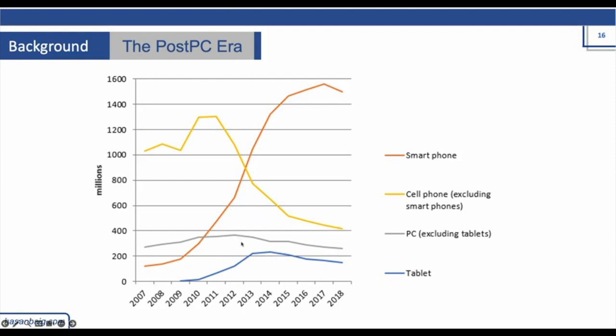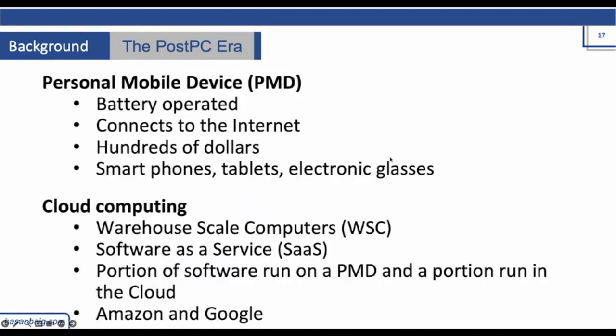For the PCs it's 2012. So you can see the number of smartphones manufactured nowadays is clearly increasing. In the post-PC era we have personal mobile devices, which include smartphones, tablets, electronic glasses. Now cloud computing has become a tradition, and we have Amazon Web Services, Google Cloud Services, and so on.